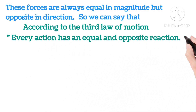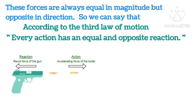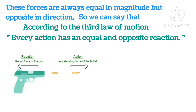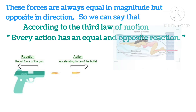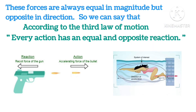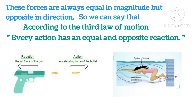As you can see in the picture, when a bullet is fired from a gun, the gun recoils back. Similarly, when a swimmer exerts a force on the wall, their body is pushed forward.